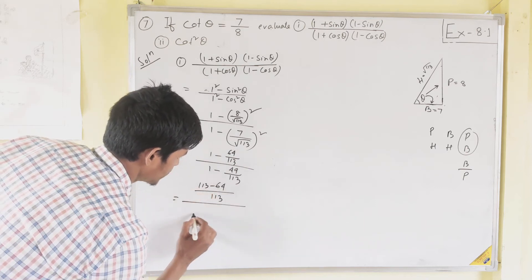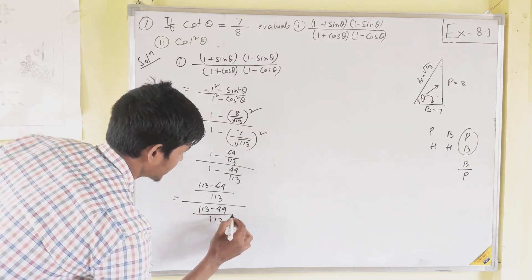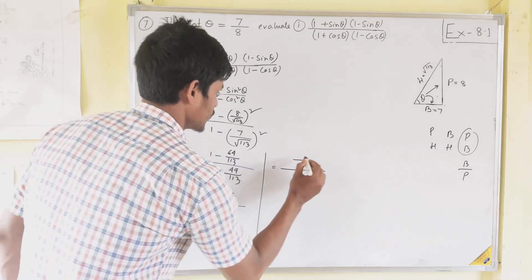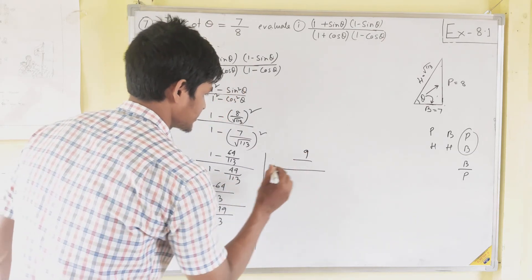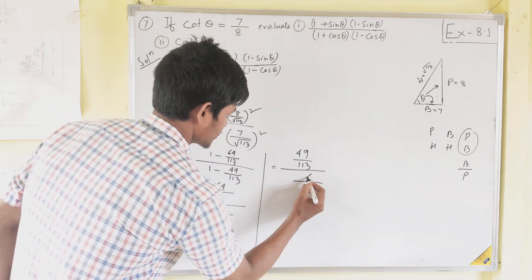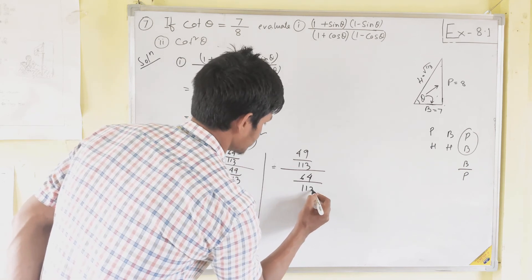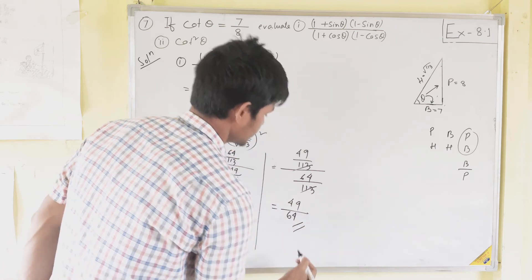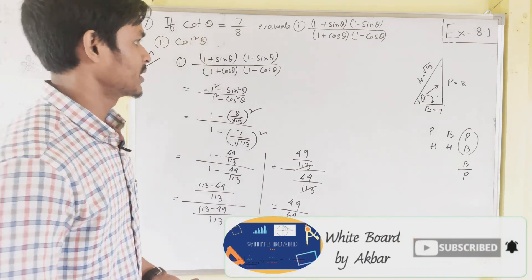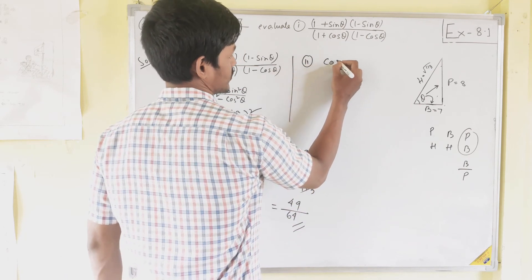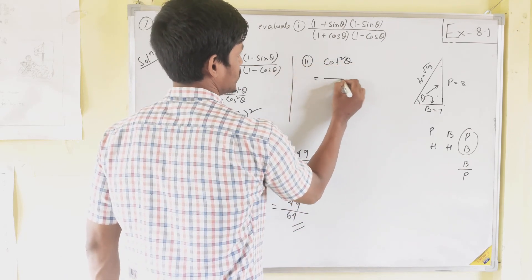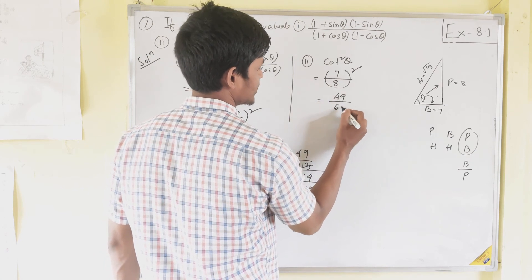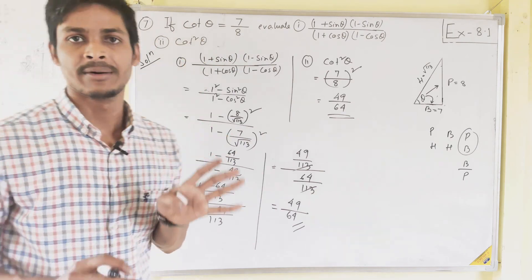Simplifying: numerator is (113 − 64)/113 equals 49/113, and denominator is (113 − 49)/113 equals 64/113. These 113s cancel, giving the answer 49 by 64. For Part 2, cot squared theta: the value of cot theta is already given as 7 by 8, so cot squared theta equals (7/8)² equals 49 by 64.